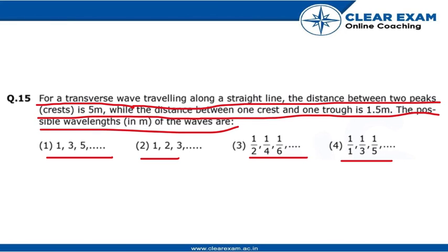Hence option 4 is the correct one. So we can say that the possible values of the wavelength will be 1, 1/3, 1/5, and so on. Hope you understood this question well. Thank you, see you in the next question.